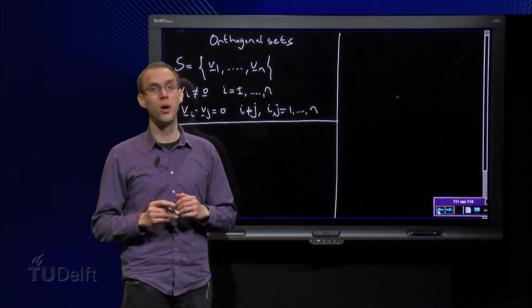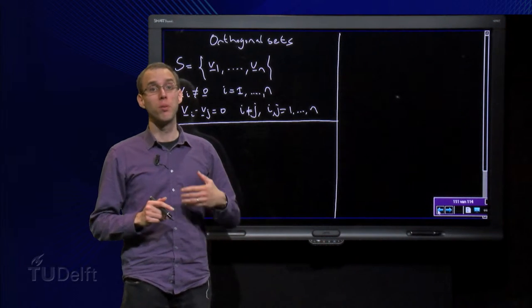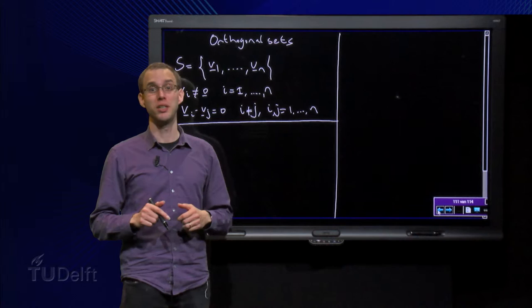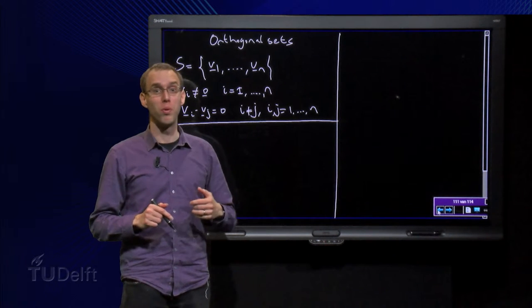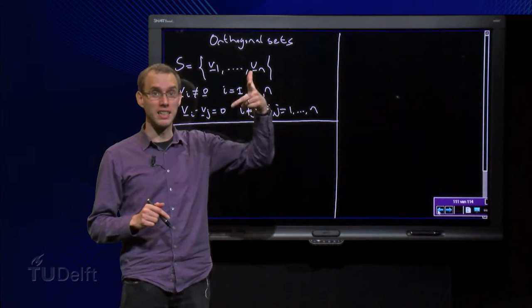Intuitively this is clear. All members point in a different direction perpendicular to each other, so you can never form one out of the others that point like this.